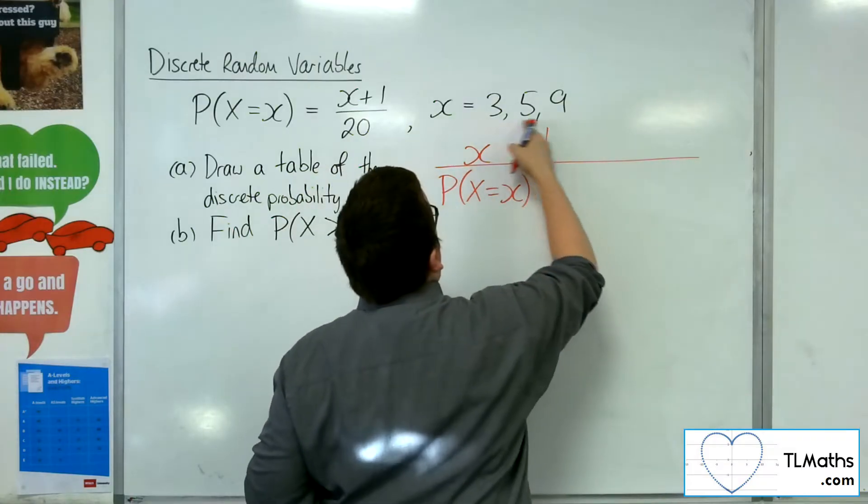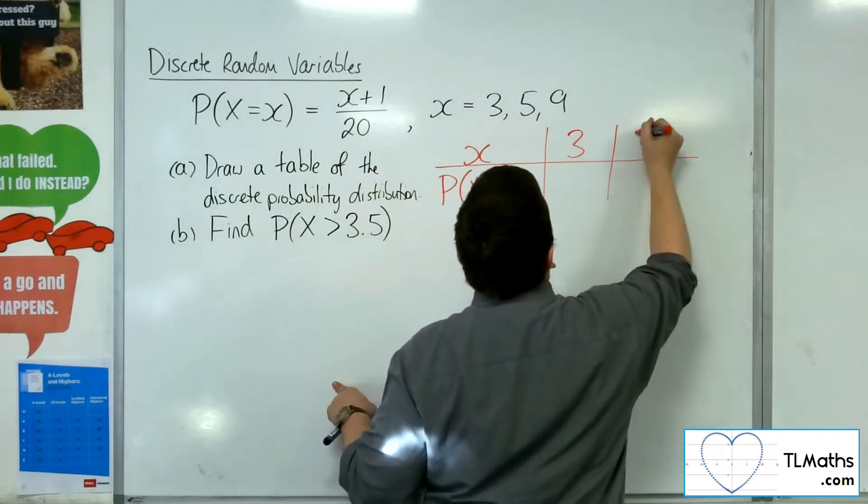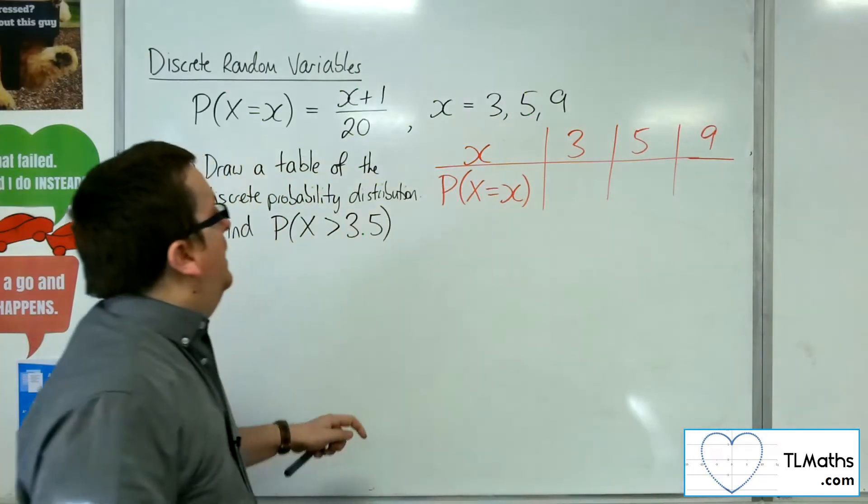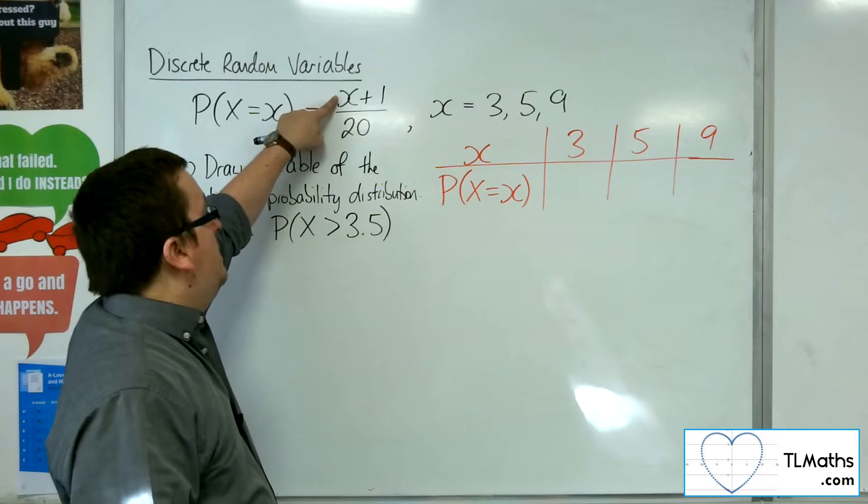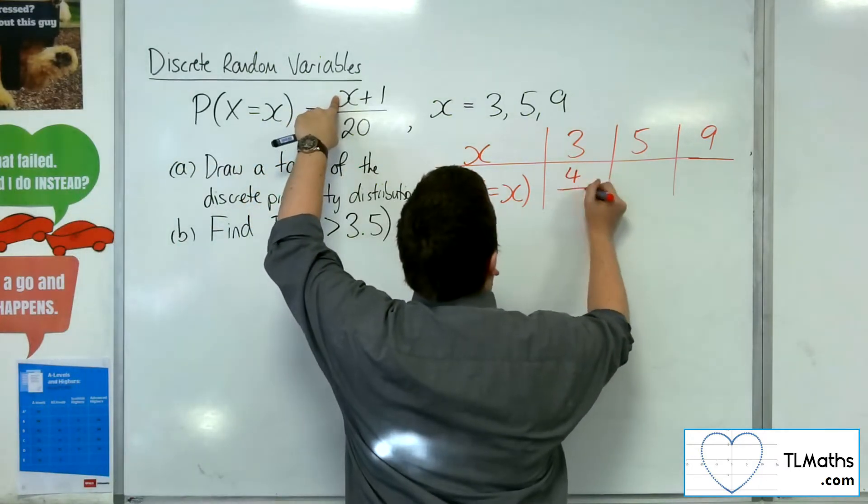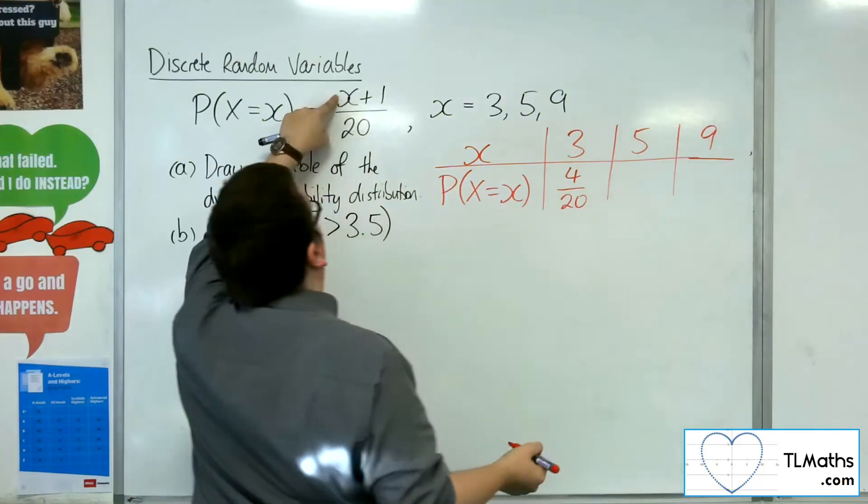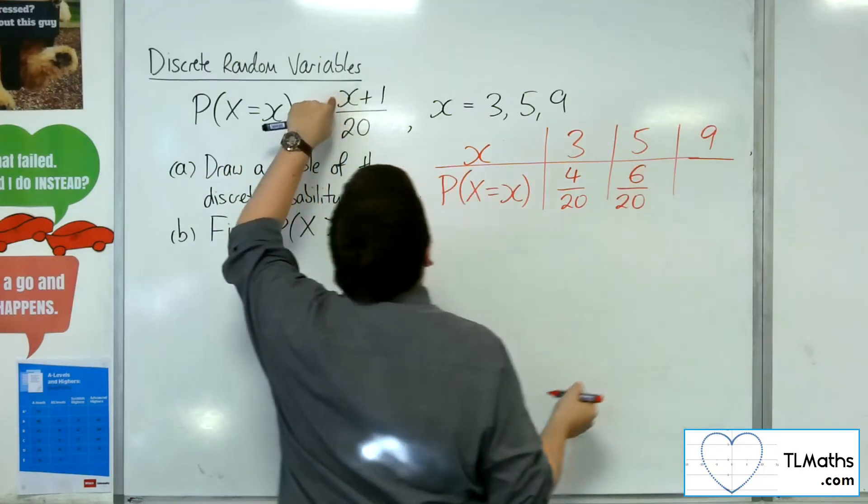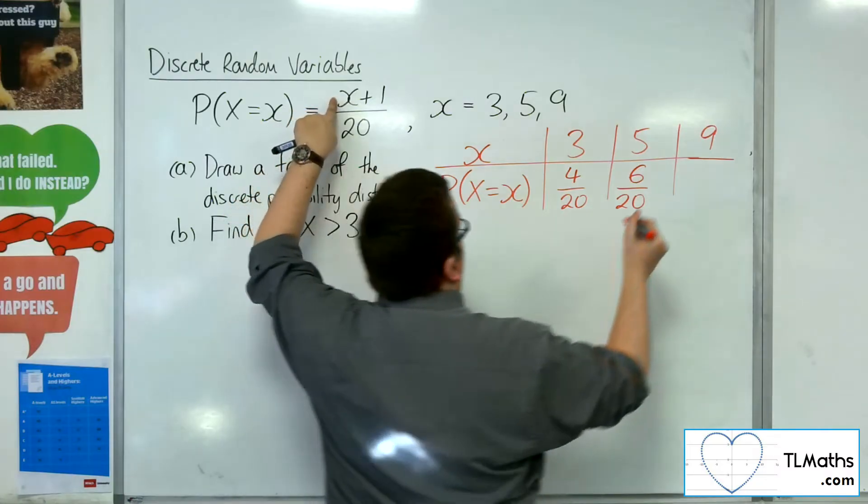So the x's can take on 3, 5, and 9. And the probabilities are: we'll have 3 plus 1 over 20, so 4 over 20; we'll have 5 plus 1 over 20, so 6 over 20; and 9 plus 1 over 20, so 10 over 20.